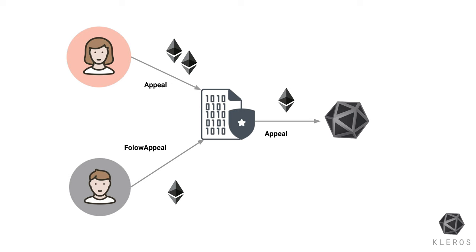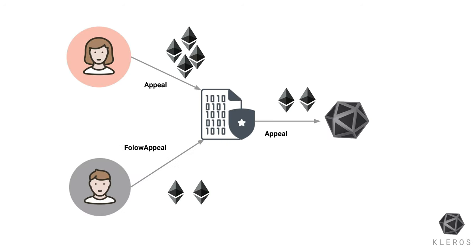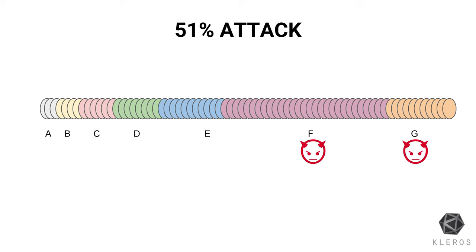That's why there's an appeal system: if you believe the ruling was incorrect due to bribery, you can put an additional stake and appeal so that more jurors are added. At the end of the day, you still have a fixed number of jurors and need most of them to be honest. If most are not honest — that's the 51% attack. Here, parties F and G hold most of the tokens, and if they vote dishonestly, you get a dishonest ruling.